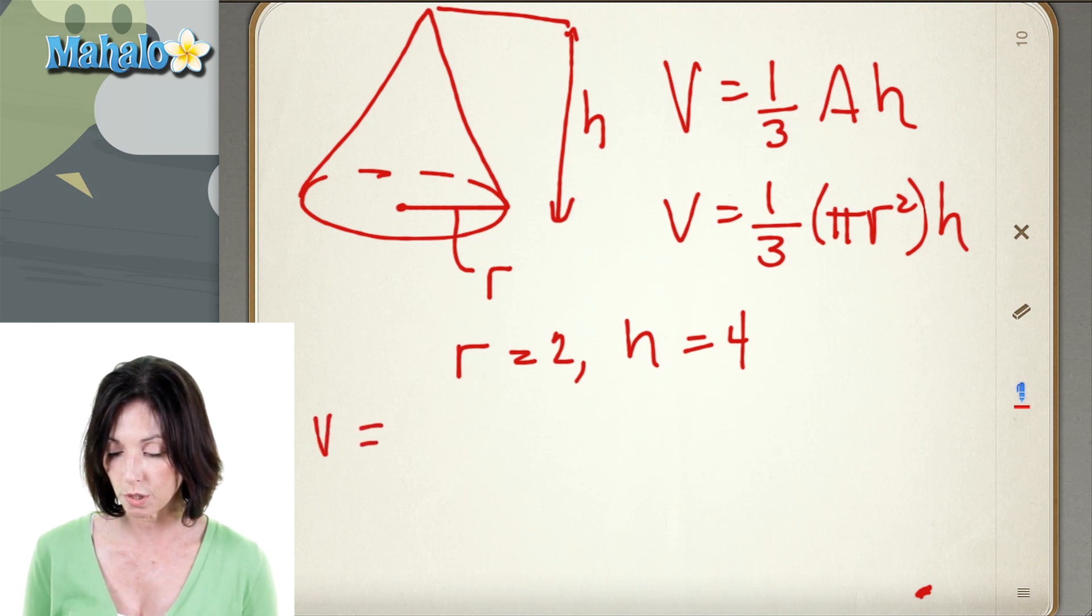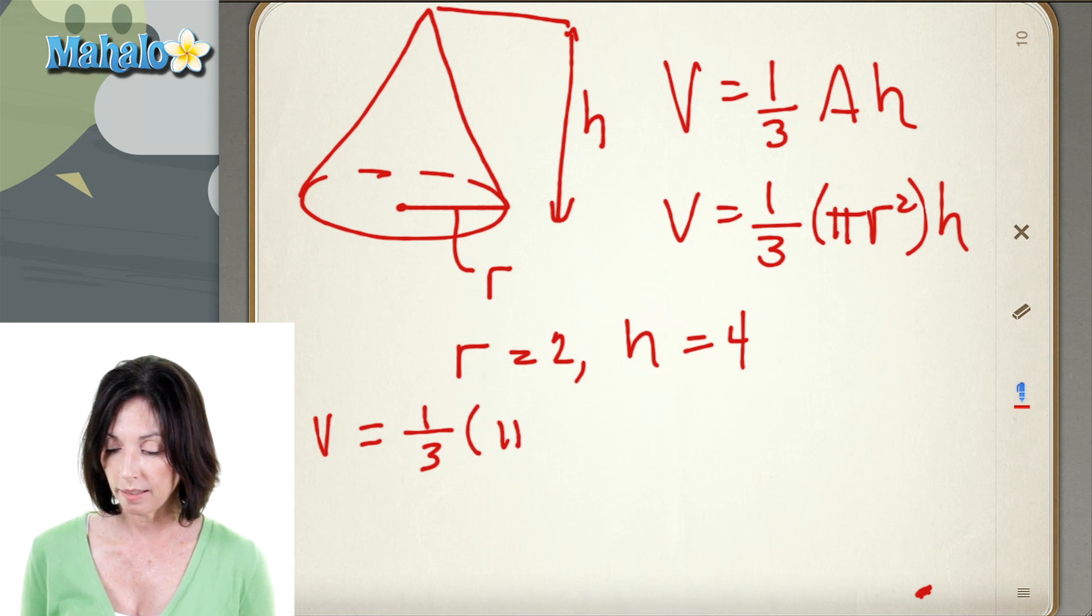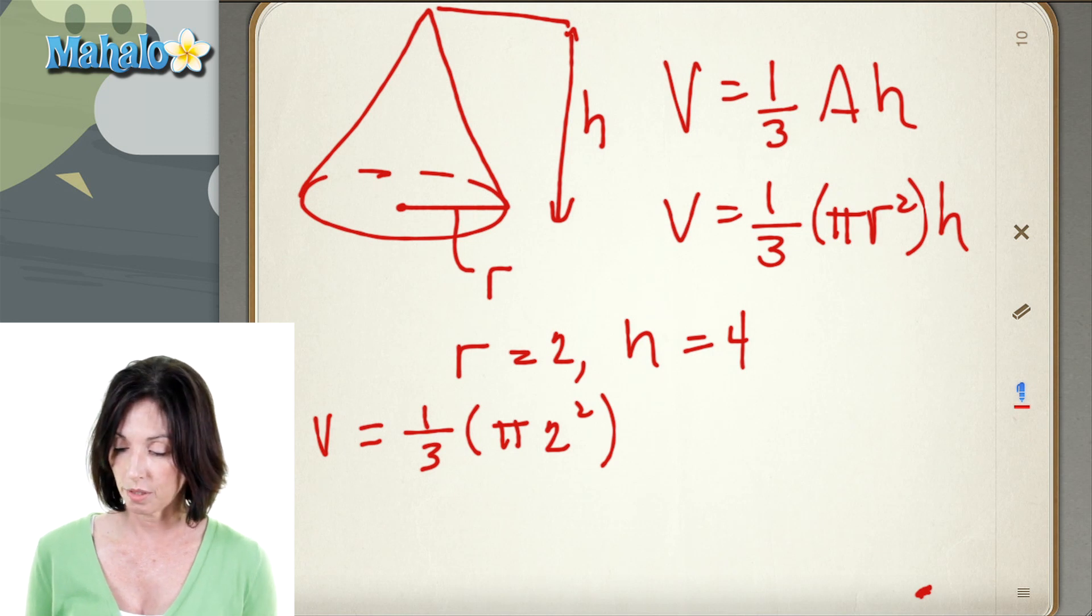So the volume is equal to one-third times pi, r is 2, so 2 squared times the height, which is 4.